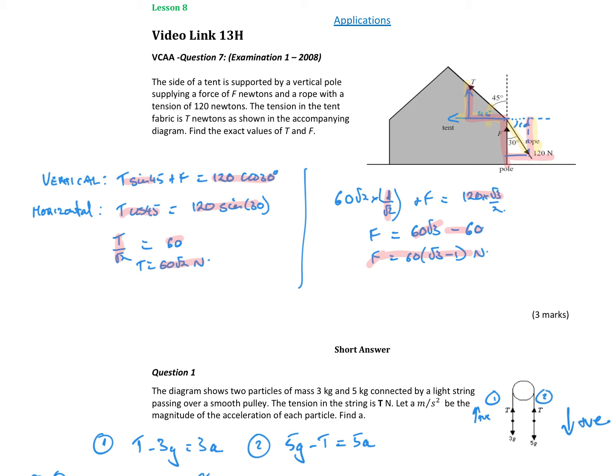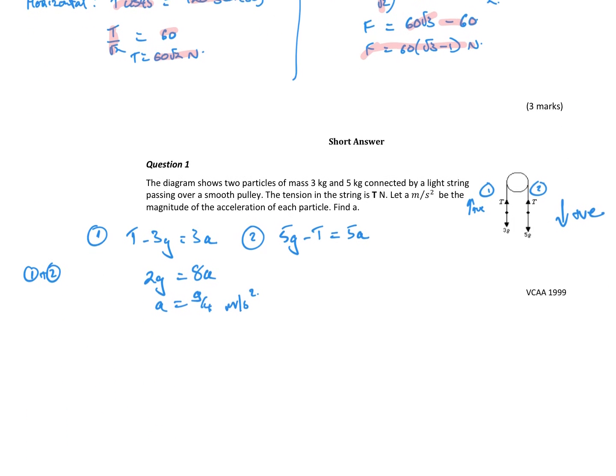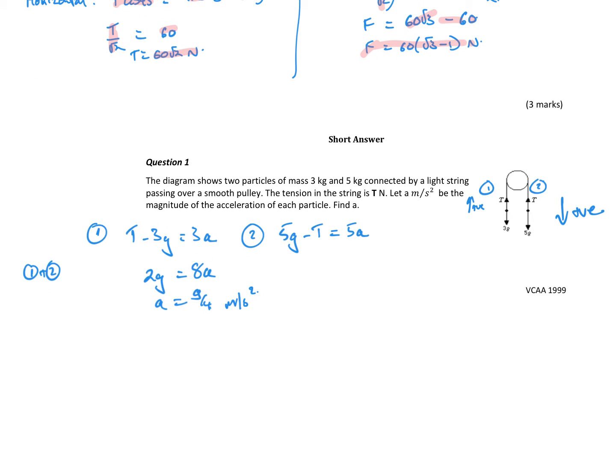So there's my horizontal force. Okay, let's keep working through. This diagram shows two particles of masses 3 and 5 kg connected by a light string passing over a smooth pulley. Tension in the string is T newtons, A meters per second squared is the magnitude of acceleration of each particle.